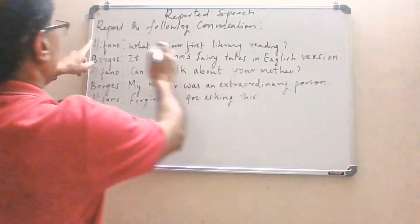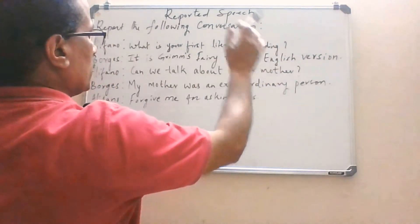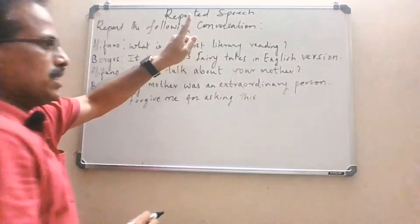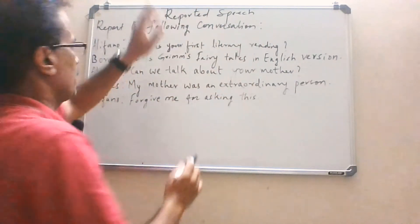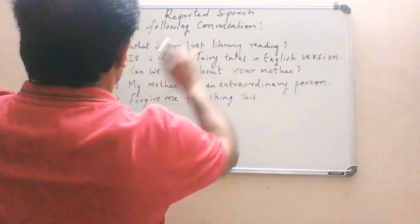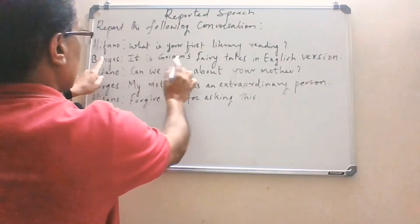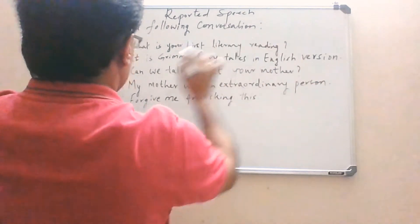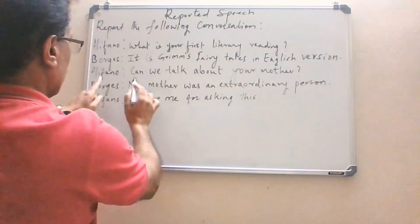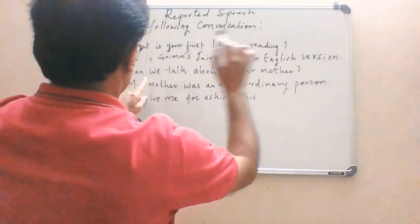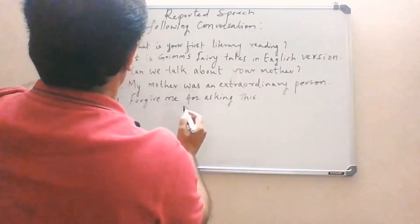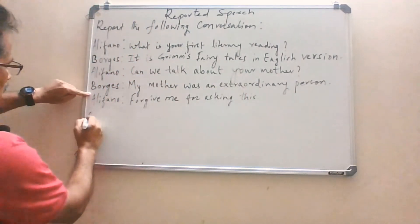This conversation has mixed sentences. Report the following conversation — this will be asked for five marks in the examination. The dialogue: Alifana asks, 'What is your first literary reading?' Bogus replies, 'It is Grimm's Fairy Tales in English version.' Alifana asks, 'Can we talk about your mother?' Bogus says, 'My mother was an extraordinary person.' Alifana says, 'Forgive me for asking this.' We begin with this first sentence by Alifana.